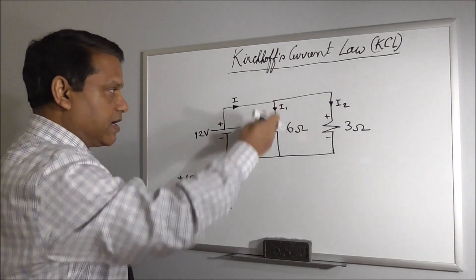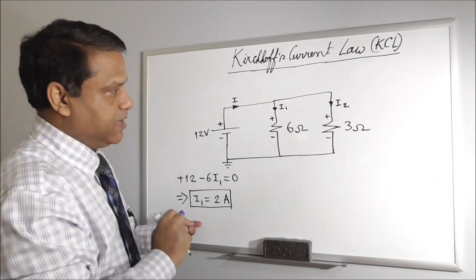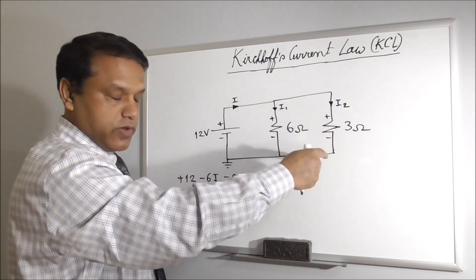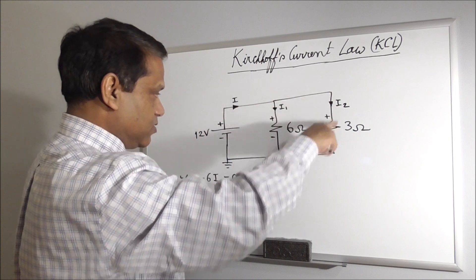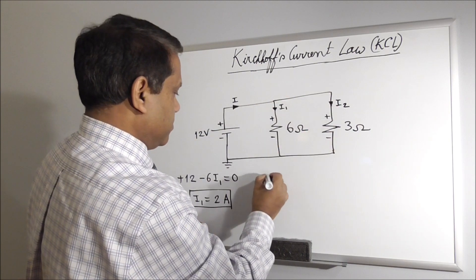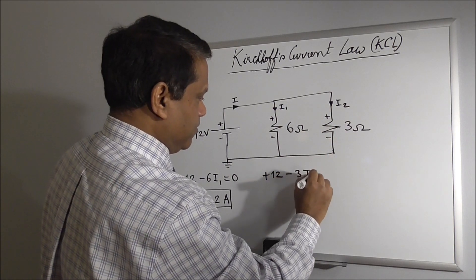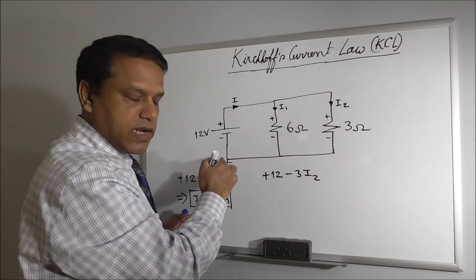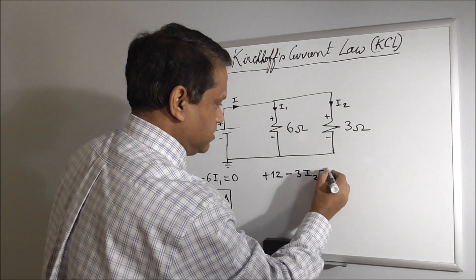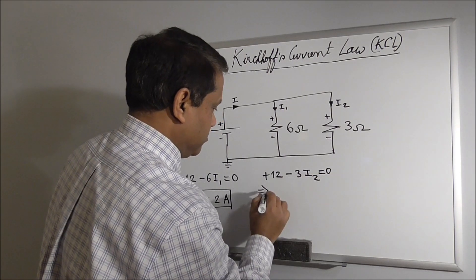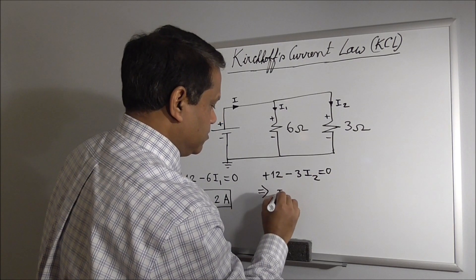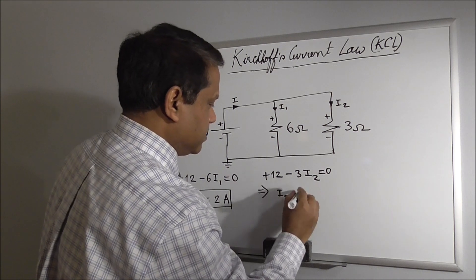So we found this current using KVL. Now we need to find this current as well. So we apply KVL in this loop. It will be plus 12, then minus 3 I2. We come back to the starting point. So equal to 0, equal to I2 is equal to 12 by 3, 4 Ampere.